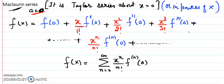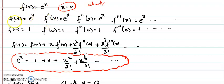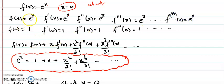Let me discuss a few standard examples. First, if f(x) equals e^x and we expand about x equals 0, it is a Maclaurin series. The derivative of e^x is e^x, double derivative is e^x, and even the nth derivative is e^x. When you plug in x equals 0, every derivative gives 1.